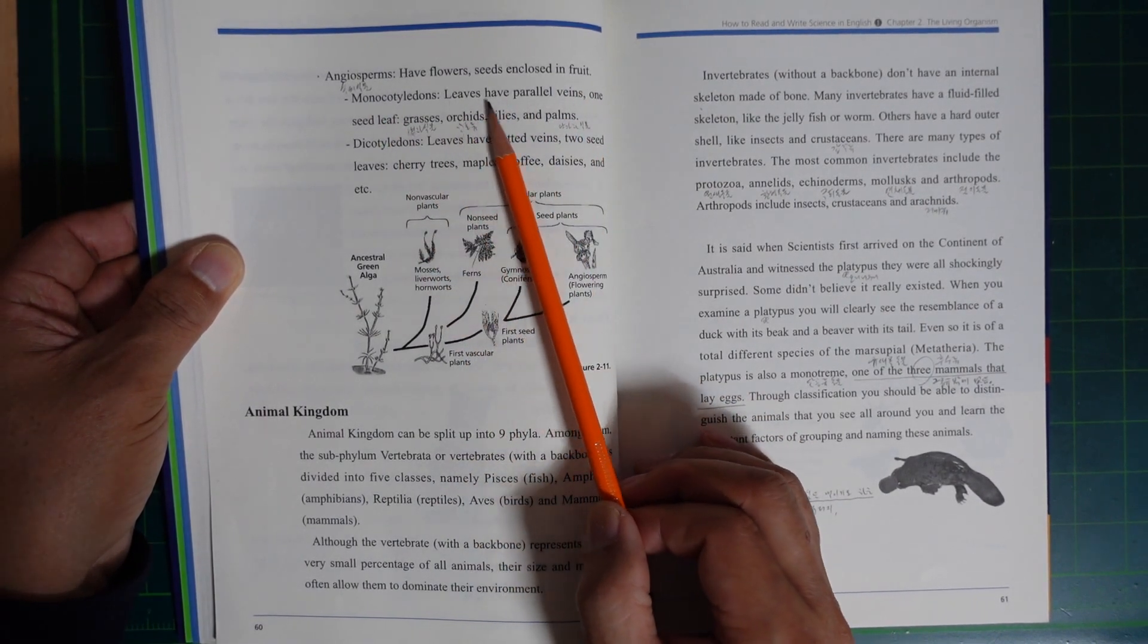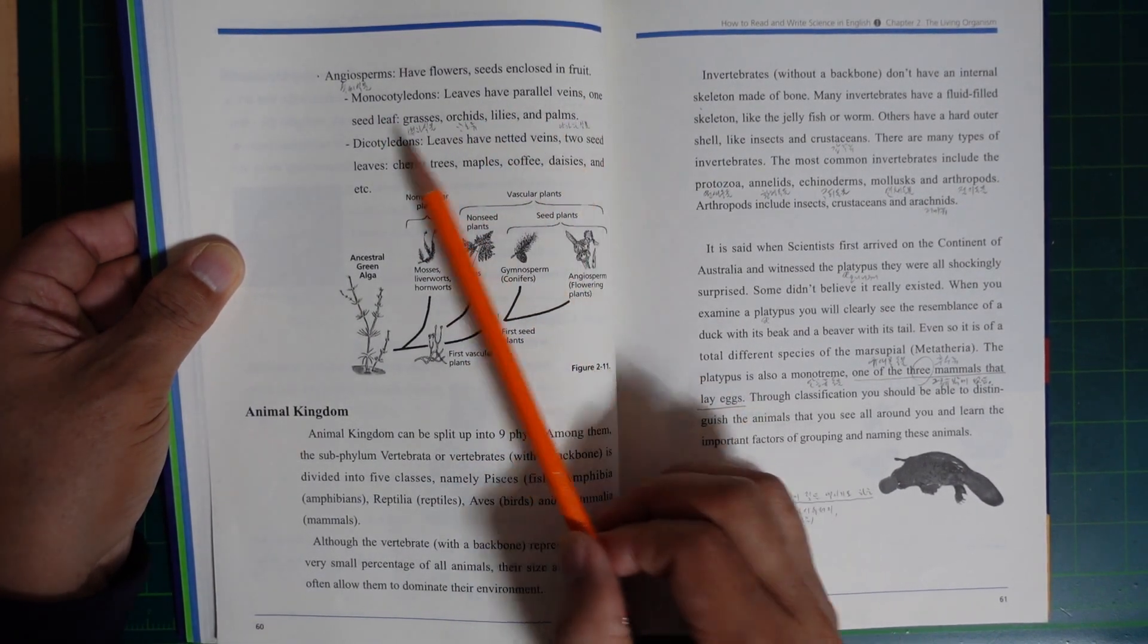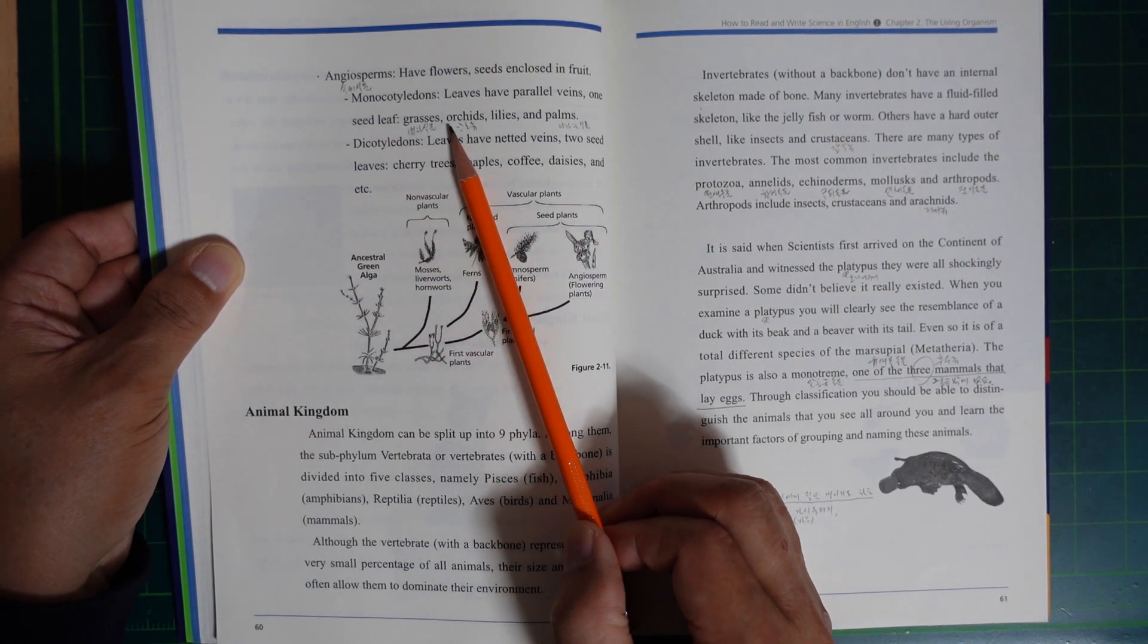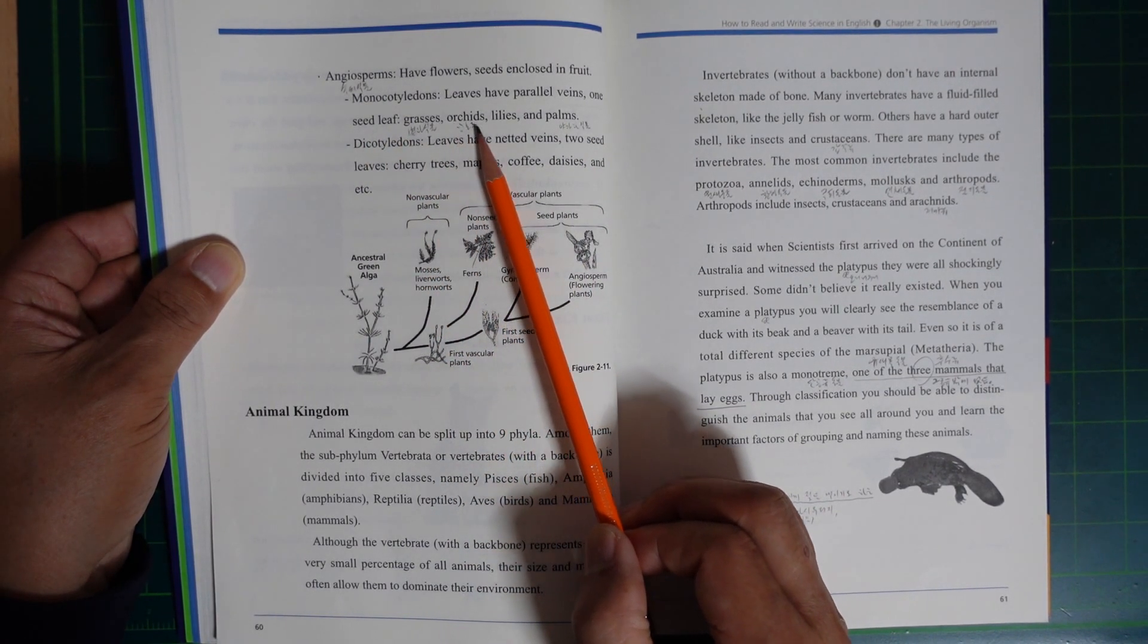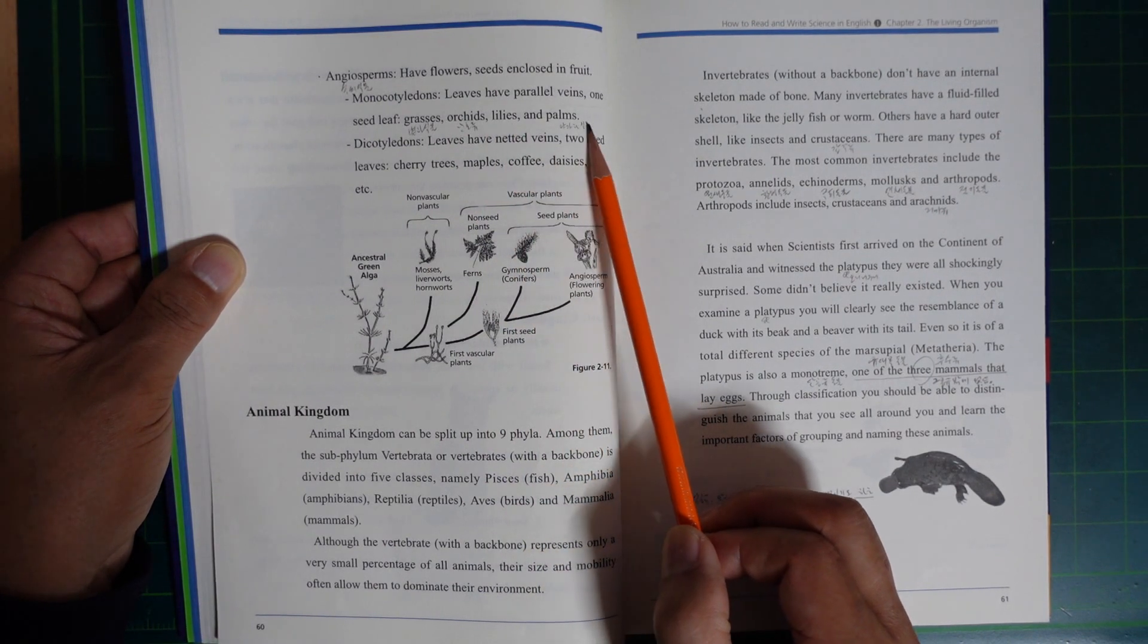Monocotyledons: leaves have parallel veins, one seed leaf. Examples include grasses, orchids, lilies, and palms.